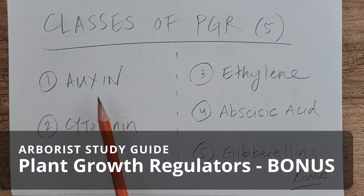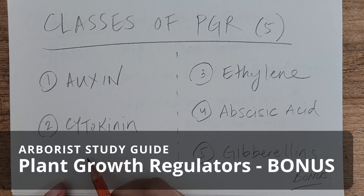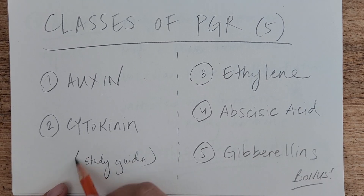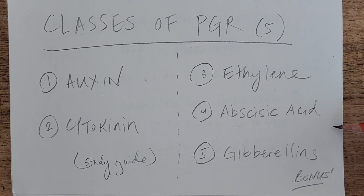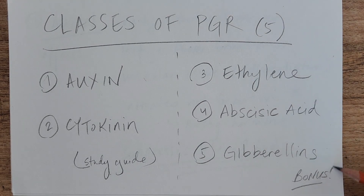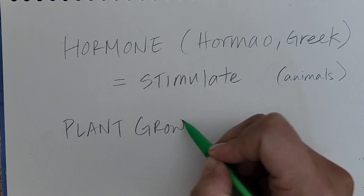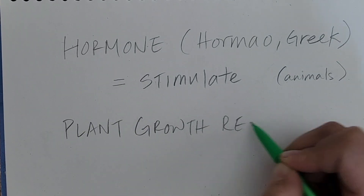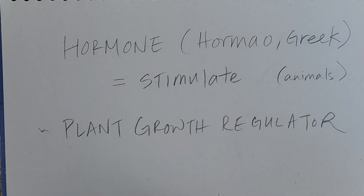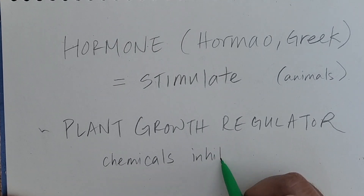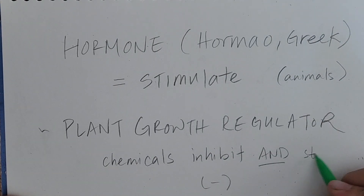This is a bonus episode on hormones because the study guide only covers two of five main classes of growth regulators. I'm making this video to cover the other three because they are also important. A quick recap: they're called plant growth regulators because they don't just stimulate growth, which is what hormone means — they also inhibit it.